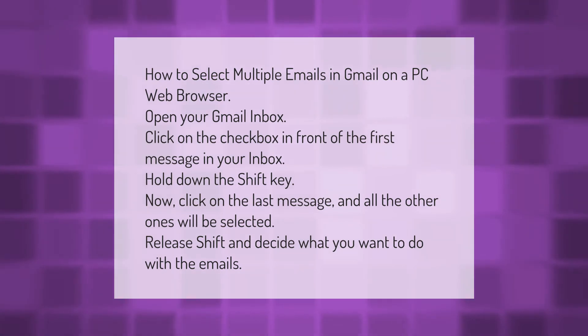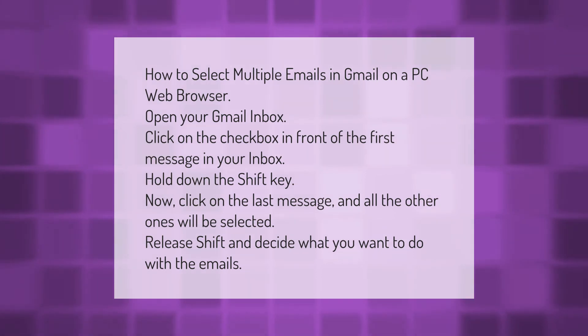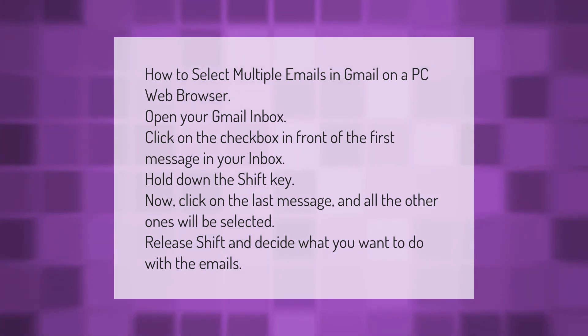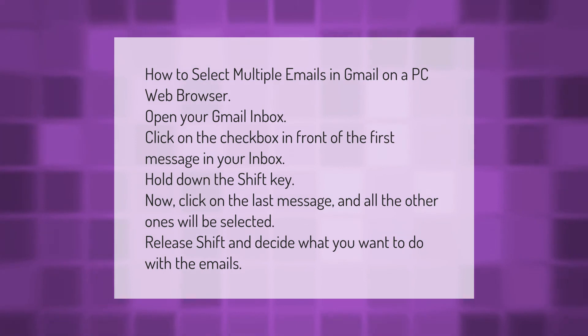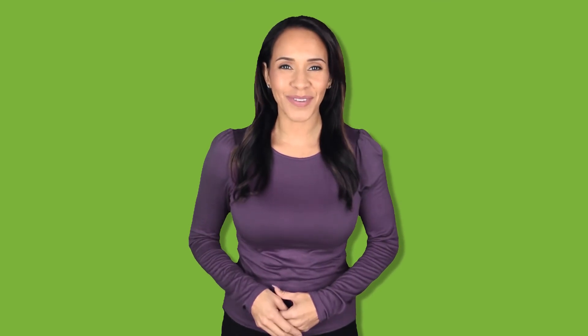Open your Gmail inbox and click on the checkbox in front of the first message. Hold down the Shift key, then click on the last message and all the other ones will be selected. Release Shift and decide what you want to do with the emails. Thank you for watching — please subscribe and hit the bell notification.